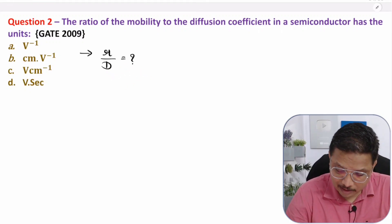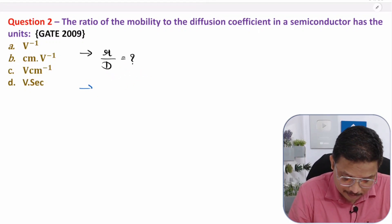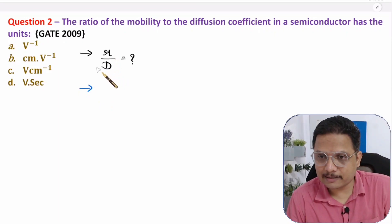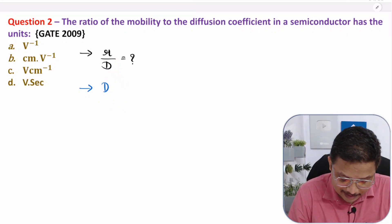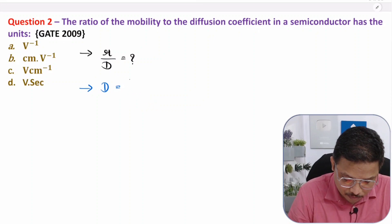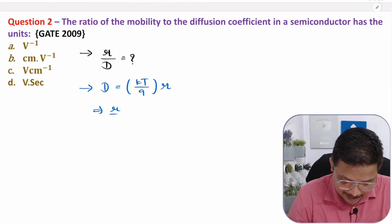What we want to calculate here is mobility to diffusion coefficient. Based on Einstein relation, D = (kT/q) × μ. From this, you can say μ/D = 1/(kT/q). And what is kT/q?